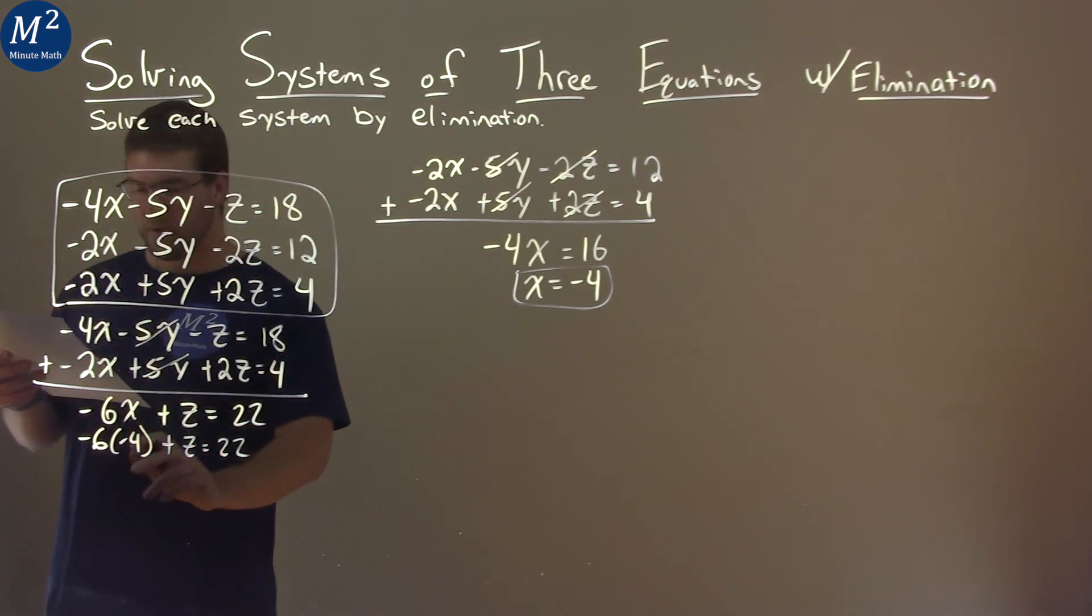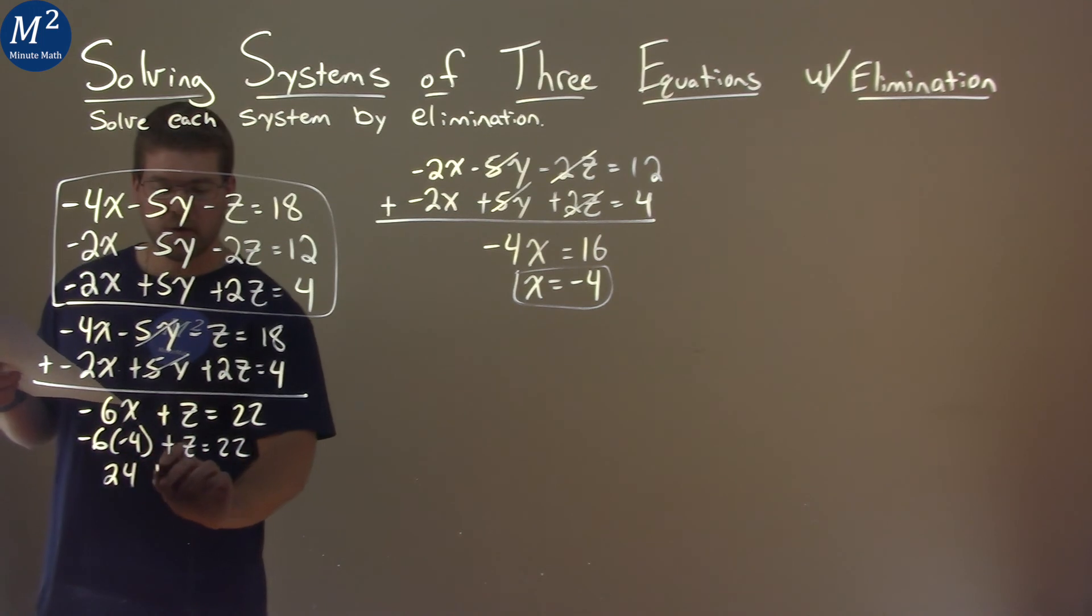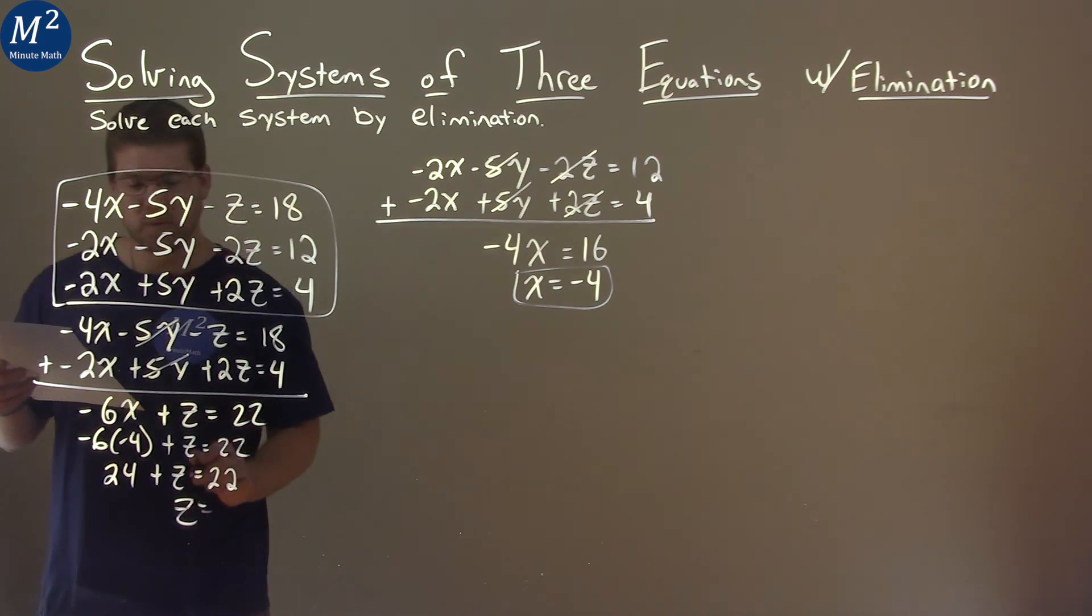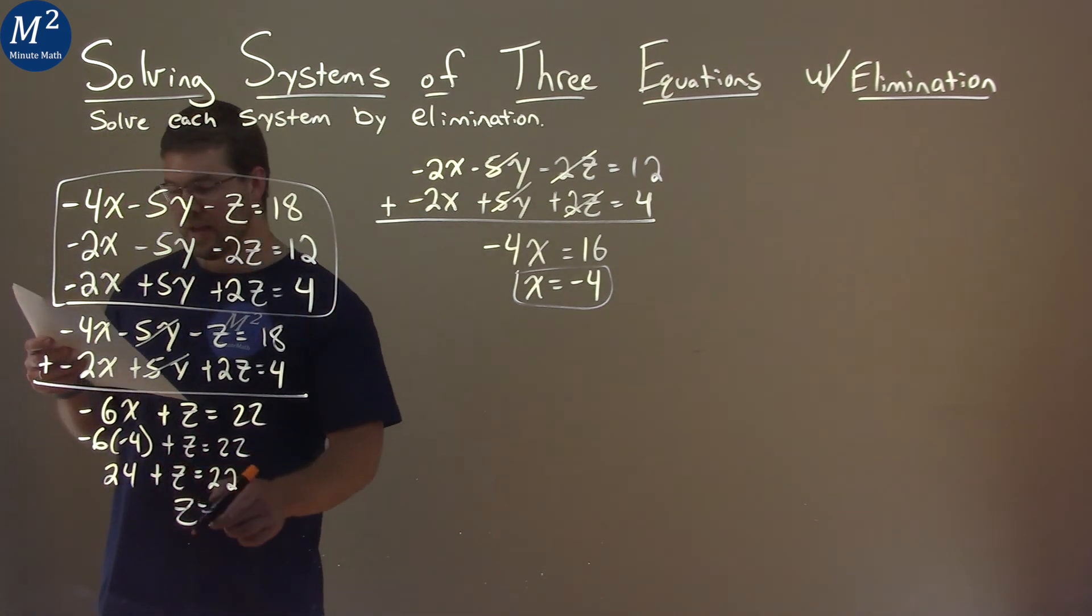Negative 6 times negative 4 is positive 24 plus z equals 22. Subtract 24 to both sides, and z is now by itself, and 22 minus 24 is negative 2.